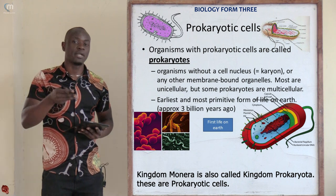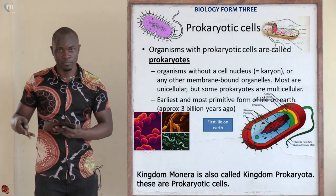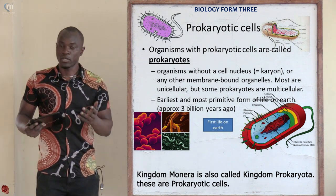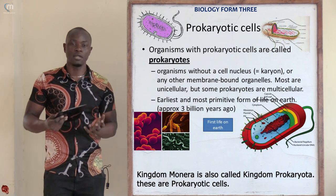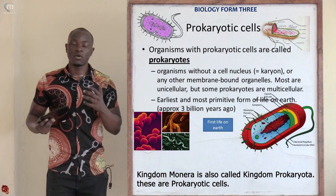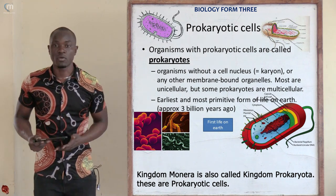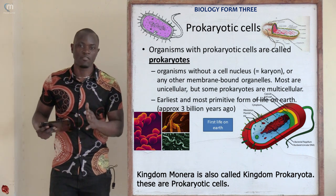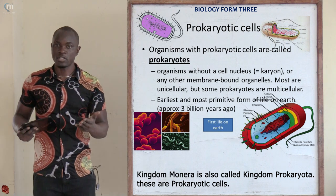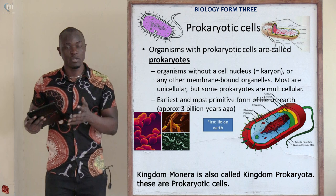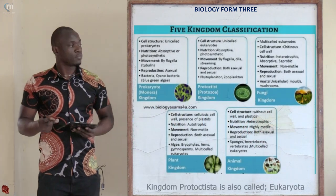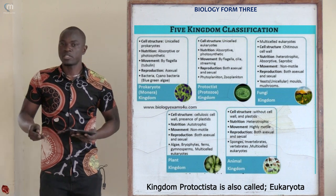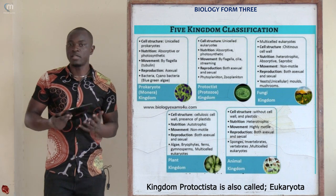Kingdom Monera can also be called Kingdom Prokaryota. For Kingdom Protoctista, they can be called Kingdom Eukaryota, Protoctista, or Protista. The word prokaryota comes from prokaryotic cell — a cell where the organelles and nucleus do not have a membrane, so they are suspended within the cytoplasm. Kingdom Protoctista is called eukaryota because eukaryotic cells have organelles and a nucleus that possess a membrane.